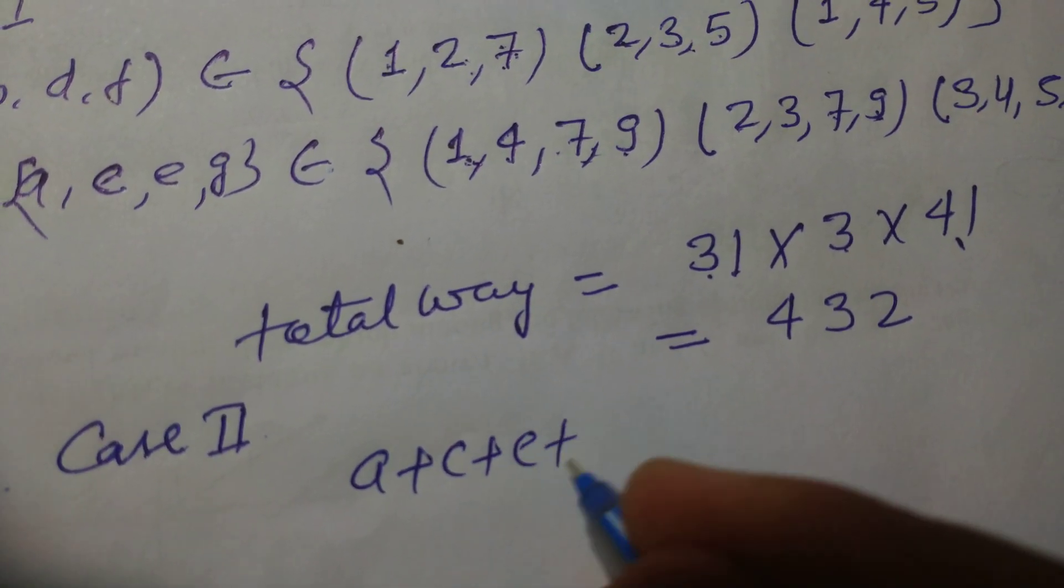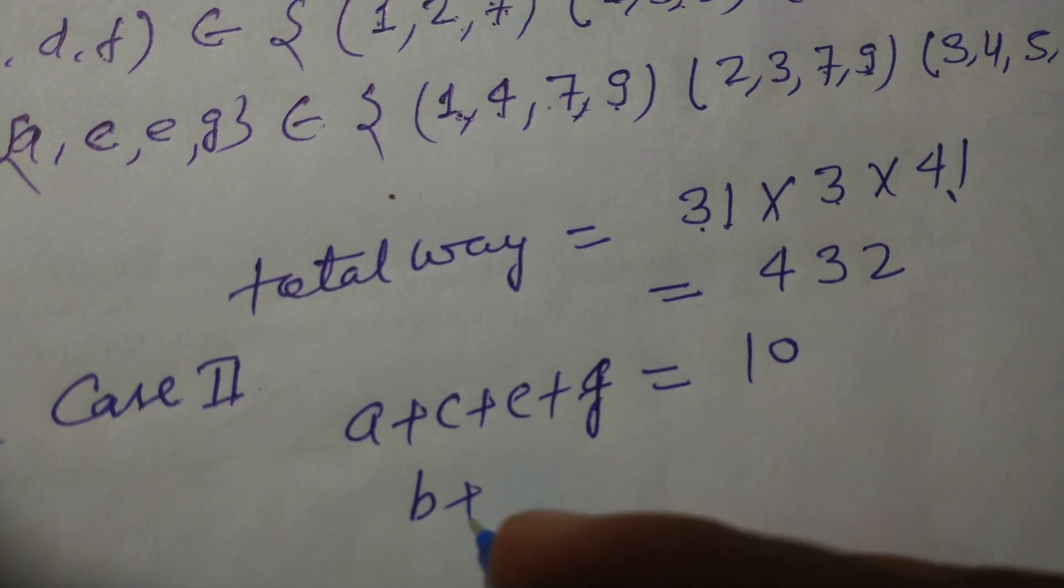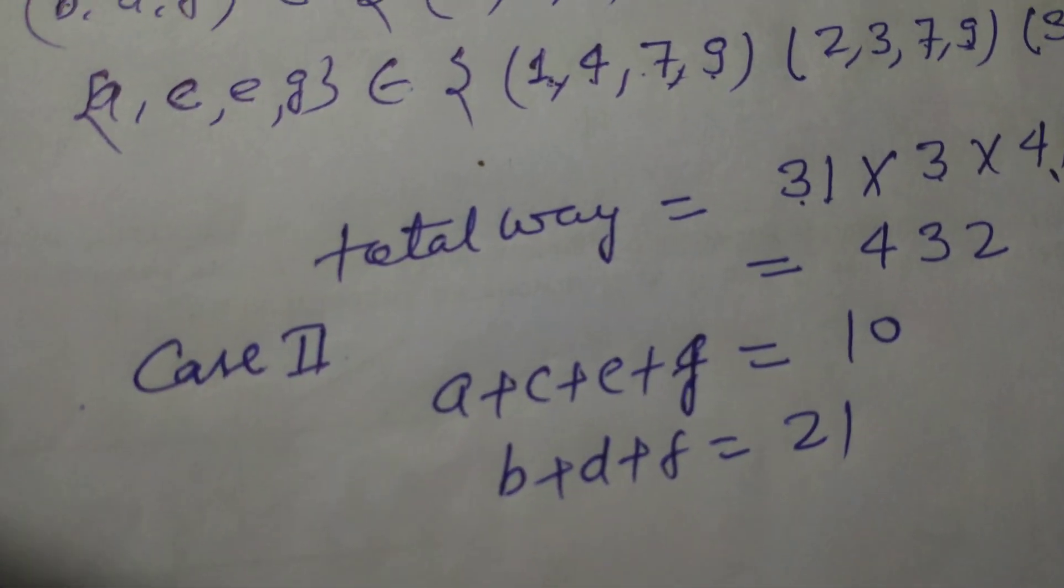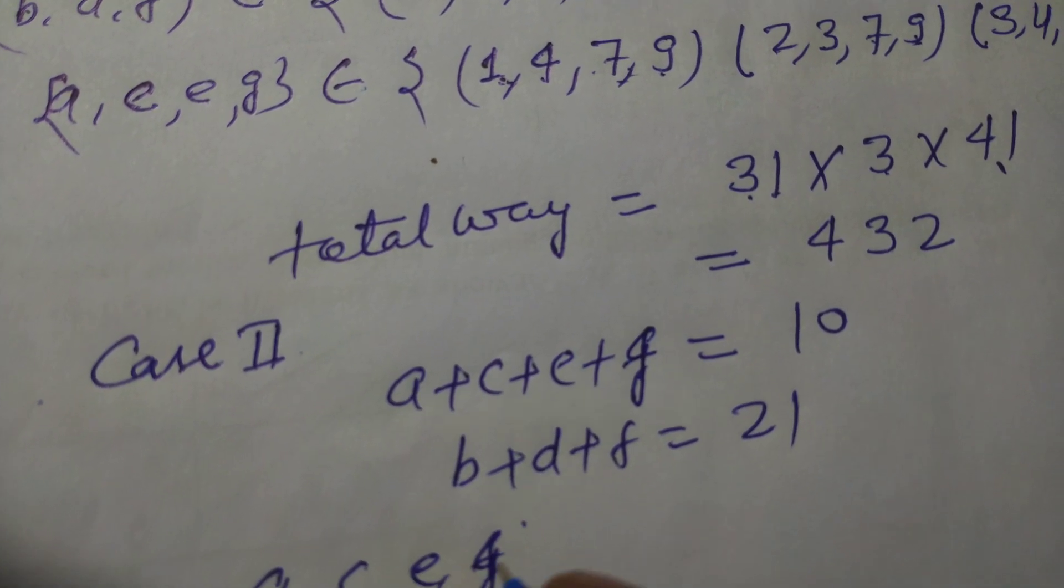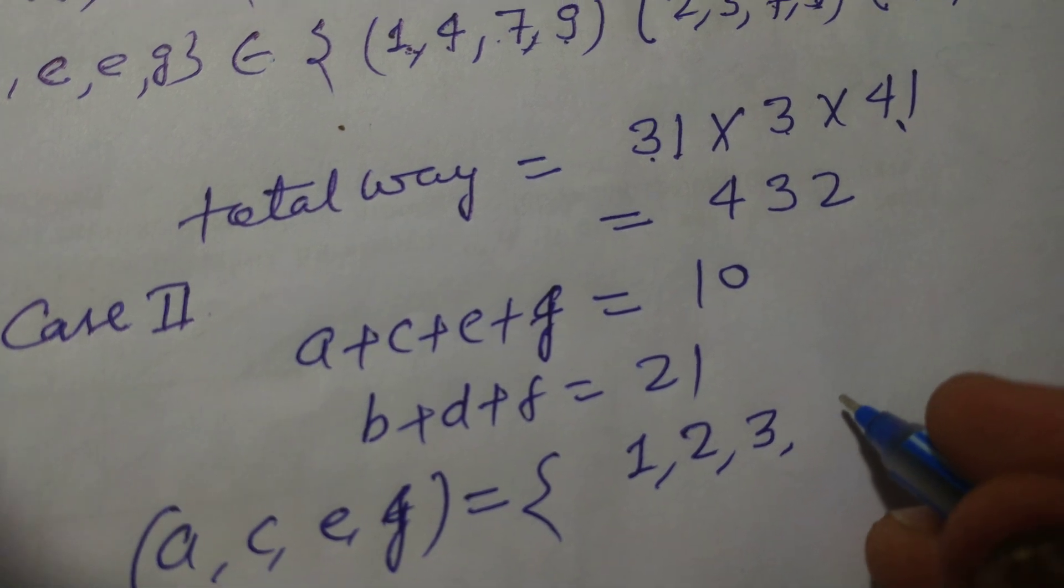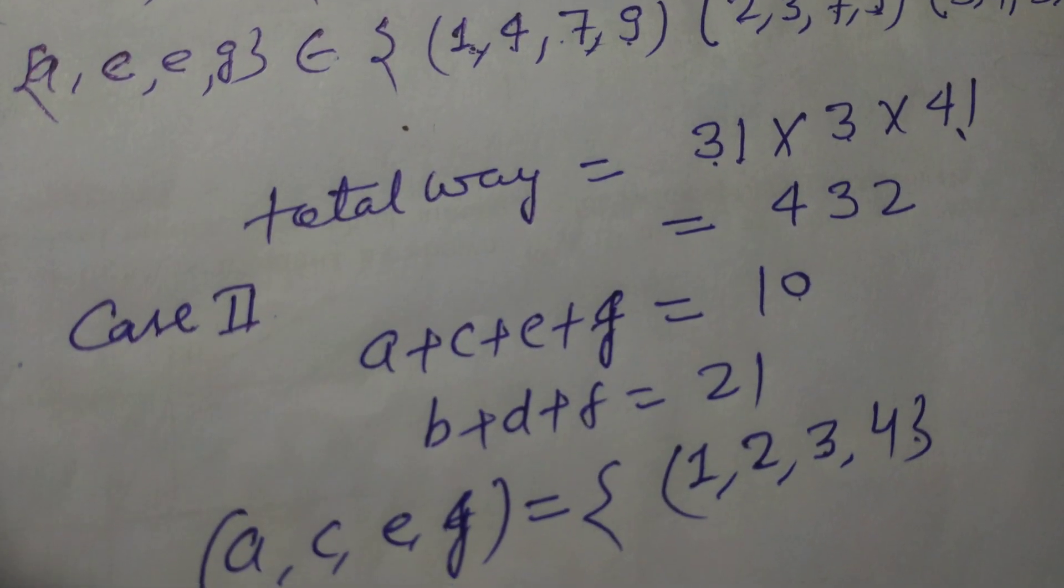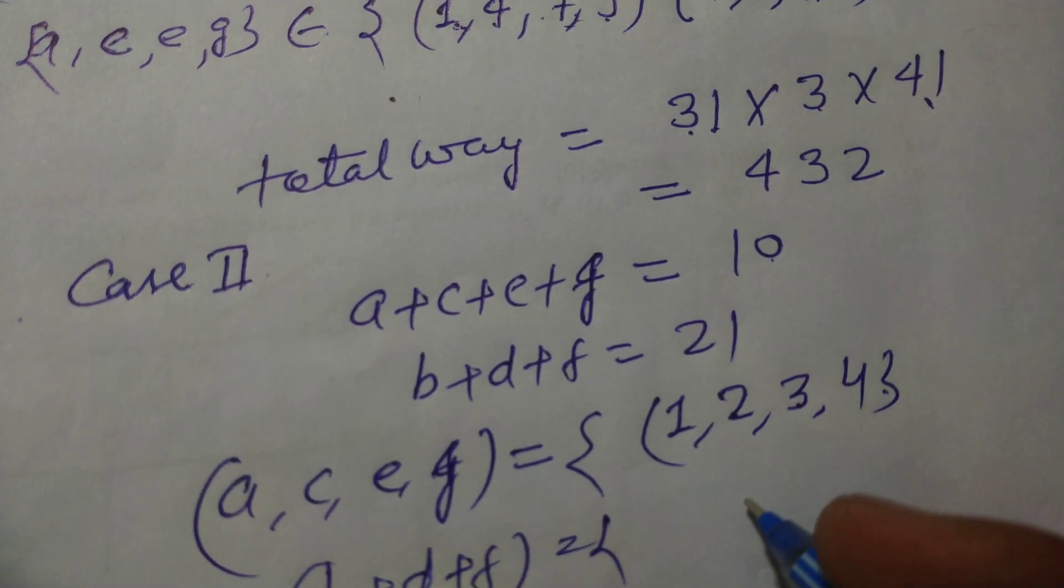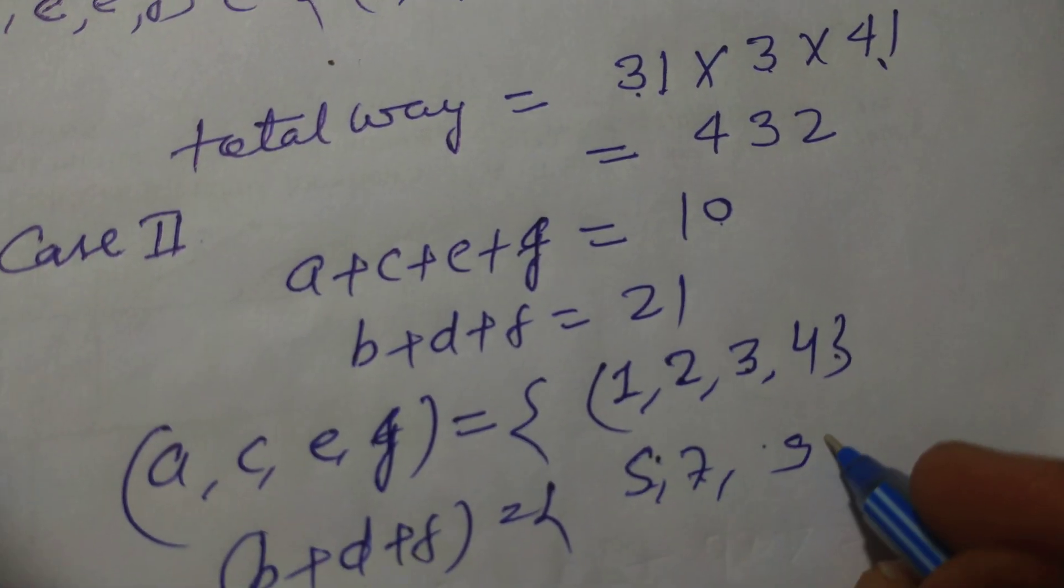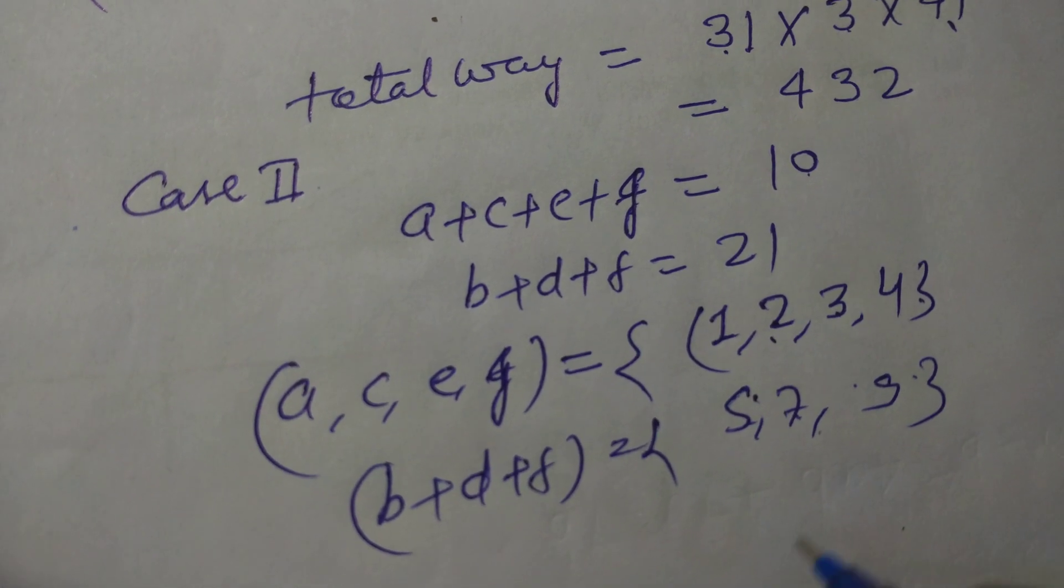Now case 2. A + C + E + G equal to 10 and B + D + F equal to 21, and the sets are: A, C, E, G equal to {1, 2, 3, 4}, so this becomes 10, and this is the only set. So B + D + F belongs to {5, 7, 9}. So there is 1 set in this element.